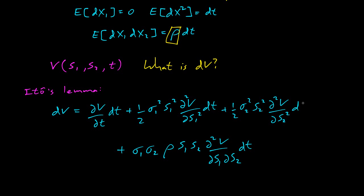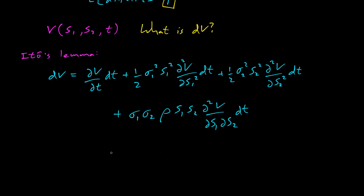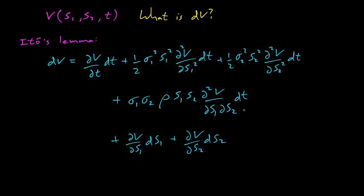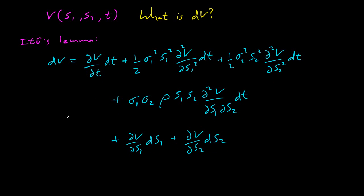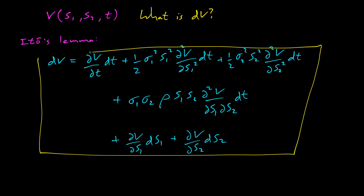Oh, I missed a DT here. And then there's some usual stuff at the end. Partial respect to S1, DS1, partial respect to S2, DS2. All right, I think this is right. So here is Ito's lemma for two assets.